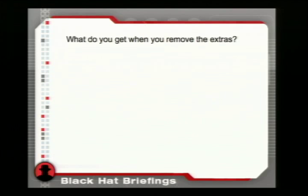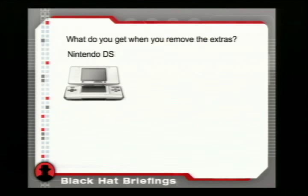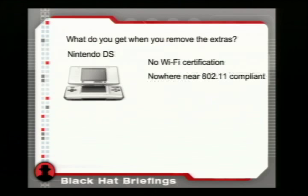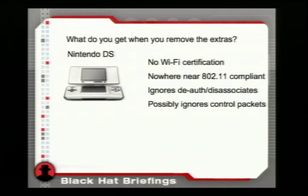So what do you get if you remove all the extras? I call this 802.11 minus minus. Dave came up with a more marketing-friendly term: Wi-Fi Lite. If you remove all the extras, you get a Nintendo DS. It has no Wi-Fi certification, it's nowhere near 802.11 compliant, it ignores de-auth and disassociate frames, and it looks like it ignores a lot of other control packets as well. Works great.